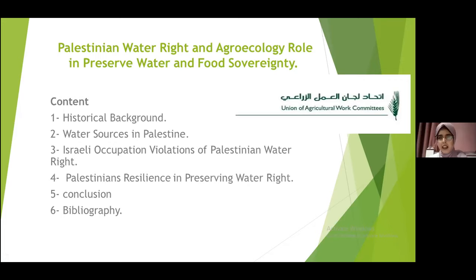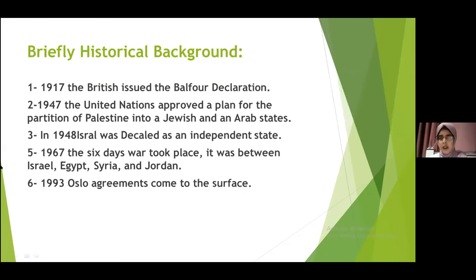We will also clarify and reflect on Palestinian resilience to preserve their water rights. For the history and key dates: in 1917, the British issued the Balfour Declaration. In 1947, the United Nations approved the partition plan, which includes the division of Palestine into two states — an Arabic state and a Jewish state.